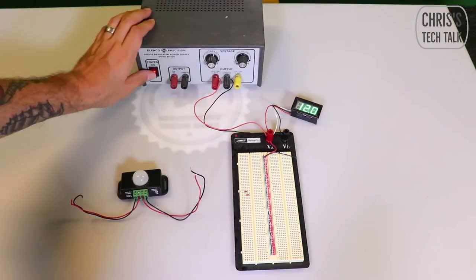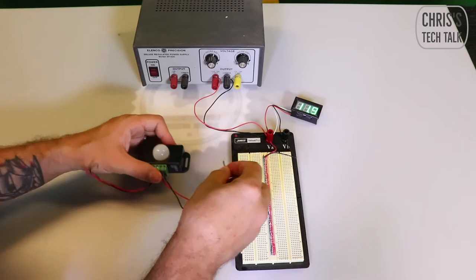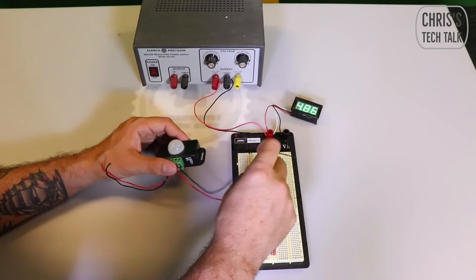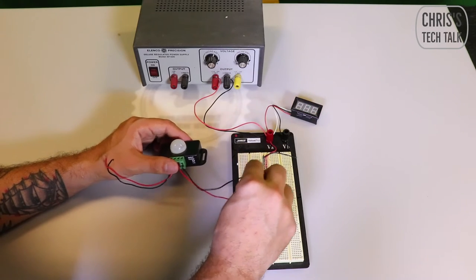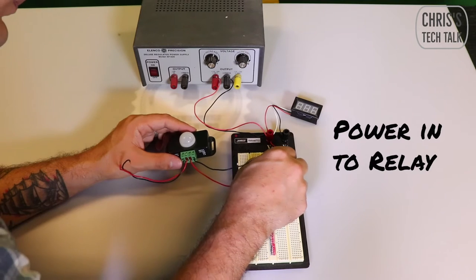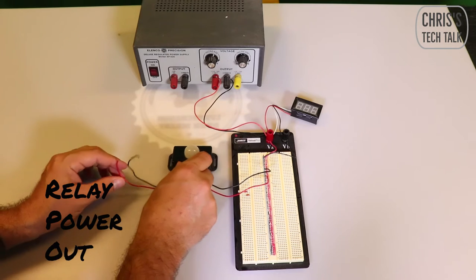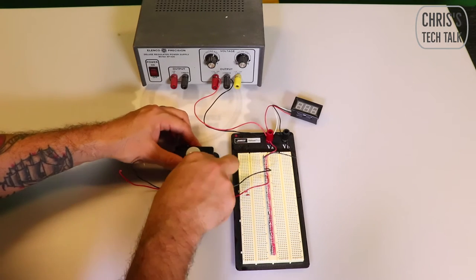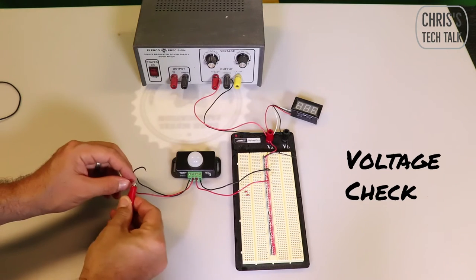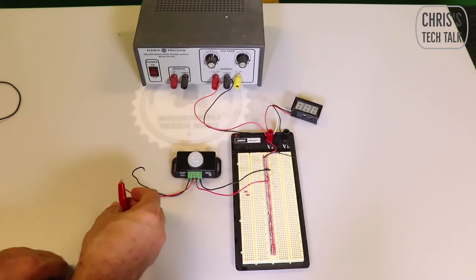So I'm going to go ahead and provide power to the relay itself, and now the relay has power going out of it. Next I'm going to do a voltage check just to check the voltage that's now coming out of it.